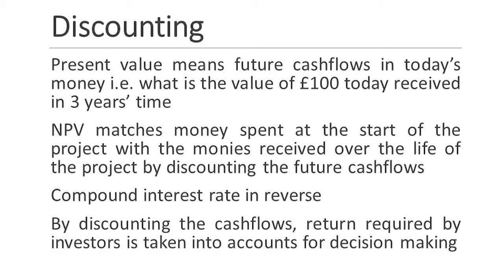Discounting is an exercise where you bring future money into today's money and compare it. For example, if I receive 110 pounds in a year's time, I bring it to the present — and while doing so, it loses some of its worth, so 110 becomes less. That is the concept of discounting. Compound interest works the opposite way: you invest 100 pounds, after one year you have 110, after two years 121 — you earn interest on interest, not just on the principal.